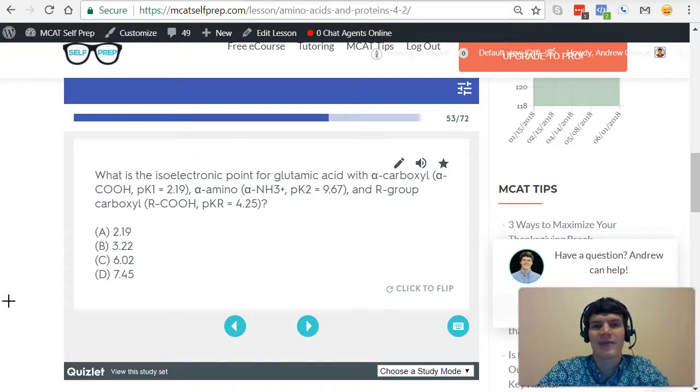Basically, the isoelectronic point is the pH at which the amino acid is going to be neutral. It's not going to have a charge. And we can figure out if our amino acid is going to be neutral or not at a certain pH based on the protonation of the various functional groups on that amino acid. And that's why in this problem they've given us the various pKa values for each functional group.